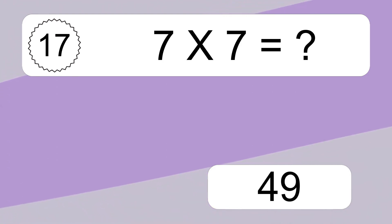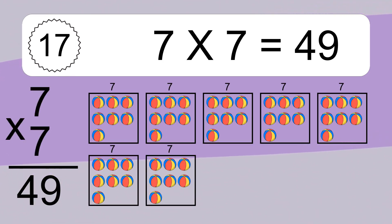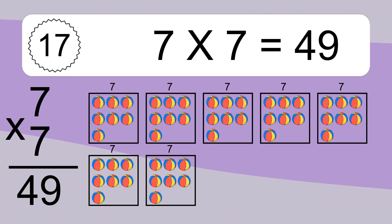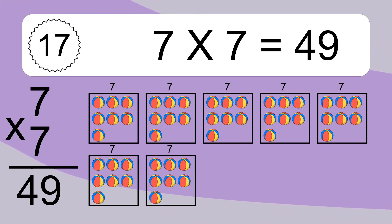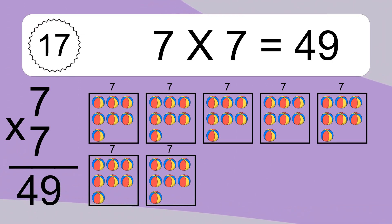7 times 7 equals what? 7 times 7 equals 49. We have 7 boxes, and each box has 7 colorful balls inside. If you count all the balls in all the boxes together, you will have 7 times 7 balls. This equals 49 balls.